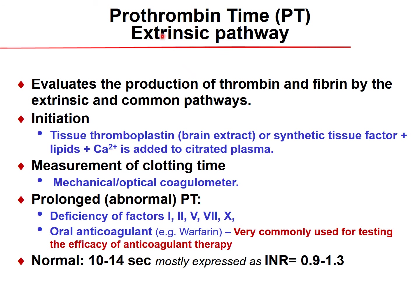The prothrombin time measures the extrinsic pathway, evaluating thrombin and fibrin production by the extrinsic and common pathways. It is initiated by adding tissue thromboplastin (made from brain extract or synthetic factors plus lipids) and calcium to citrated plasma. Clotting time is then measured by mechanical or optical coagulometer.